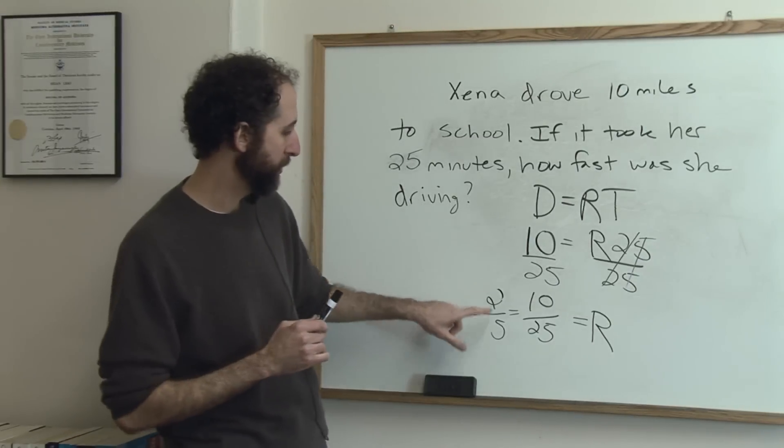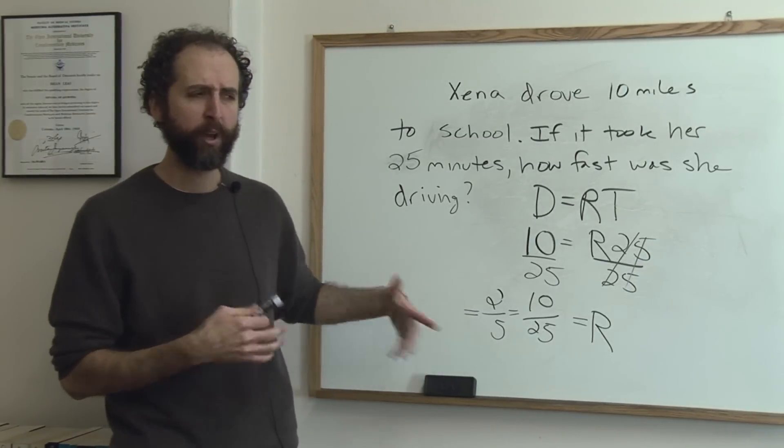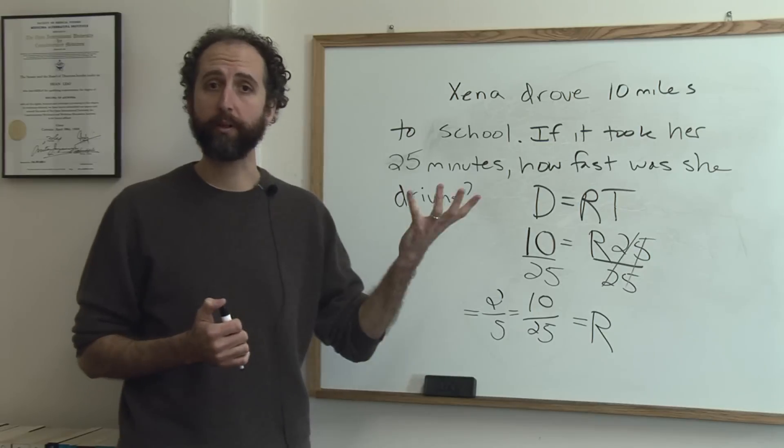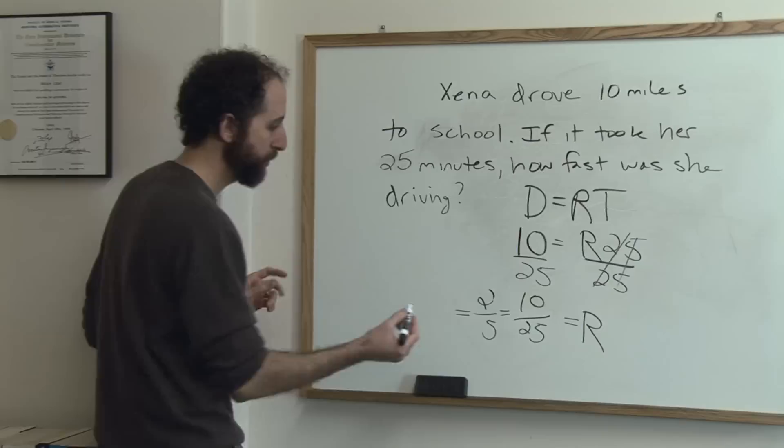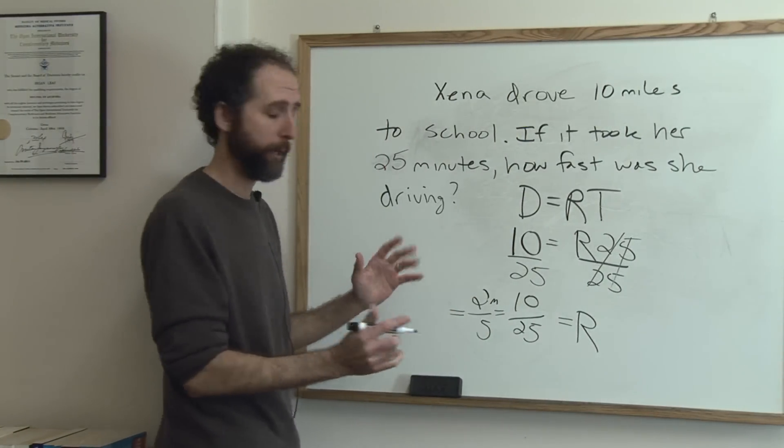So we get 2 miles per 5 minutes. That doesn't make a lot of sense to people. You don't really think of things in miles per minute. So let's change it to miles per hour. The way we would do that is since this is miles, we're happy with that. We don't want to change that.